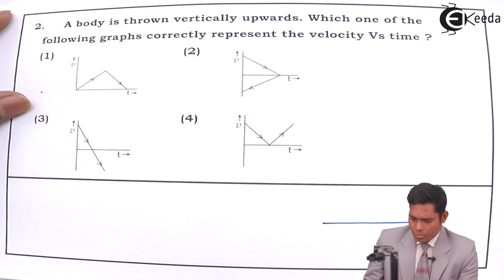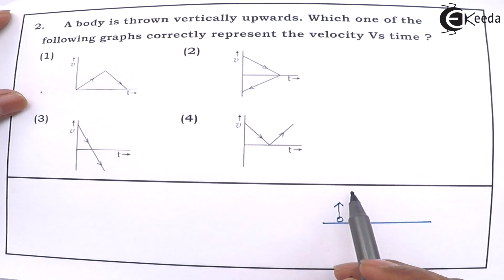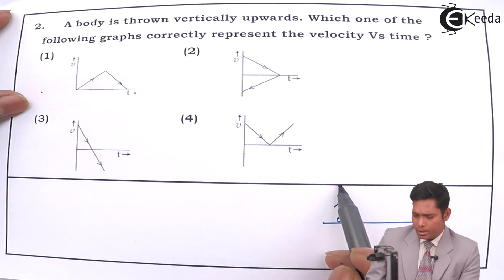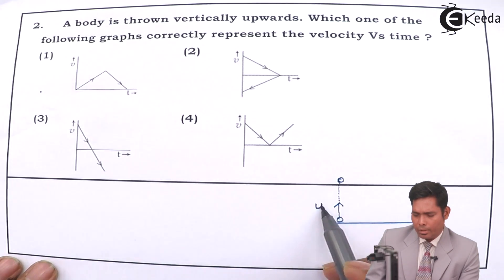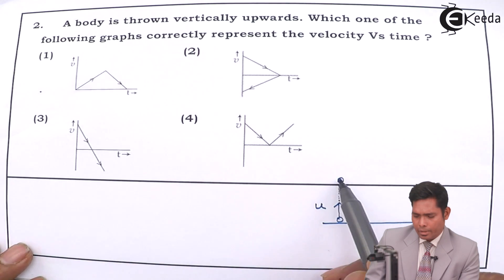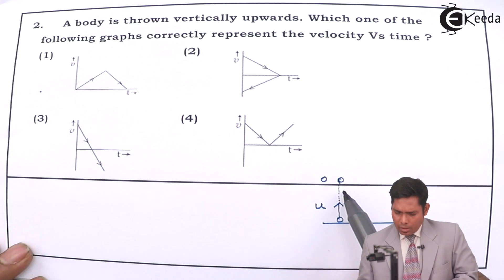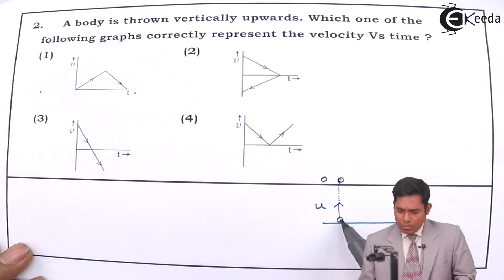Suppose I have a surface — it's the ground — and the object is here. I am throwing it vertically upward. When we throw it vertically upward, it will go up to a certain height, and then its velocity becomes zero. I have thrown it with a certain initial velocity U; it is not given in the question, so you can take U. At the highest point, the velocity will be zero.